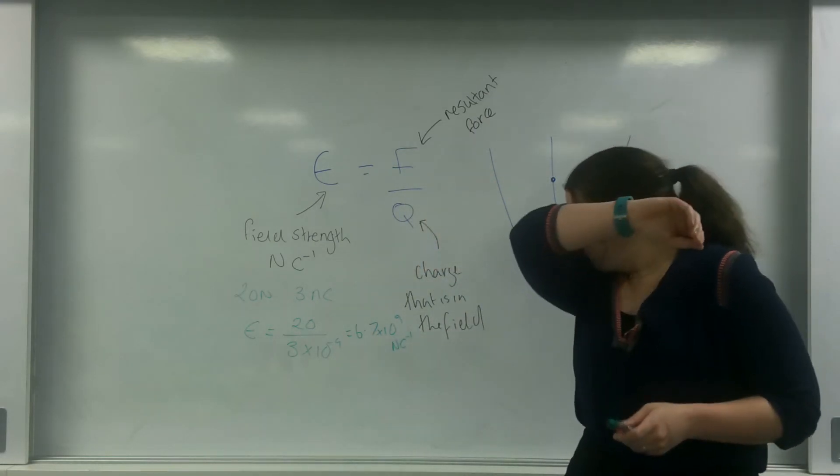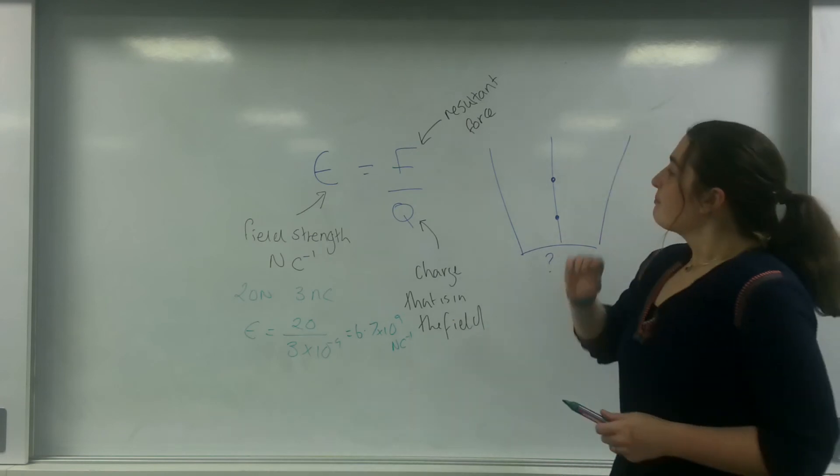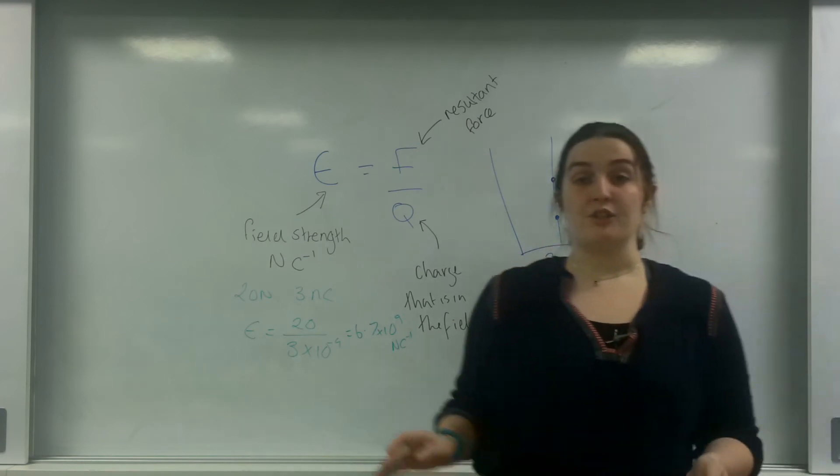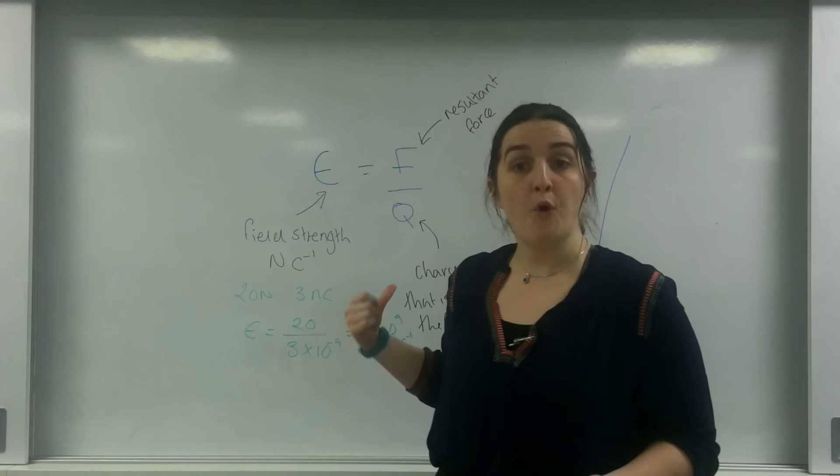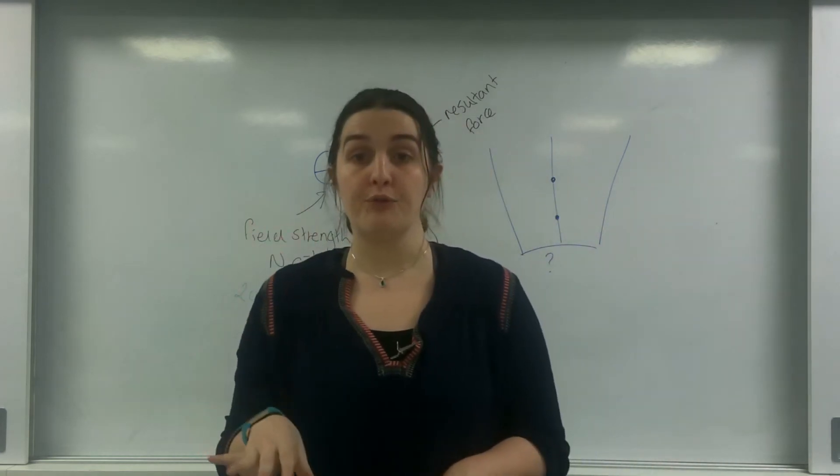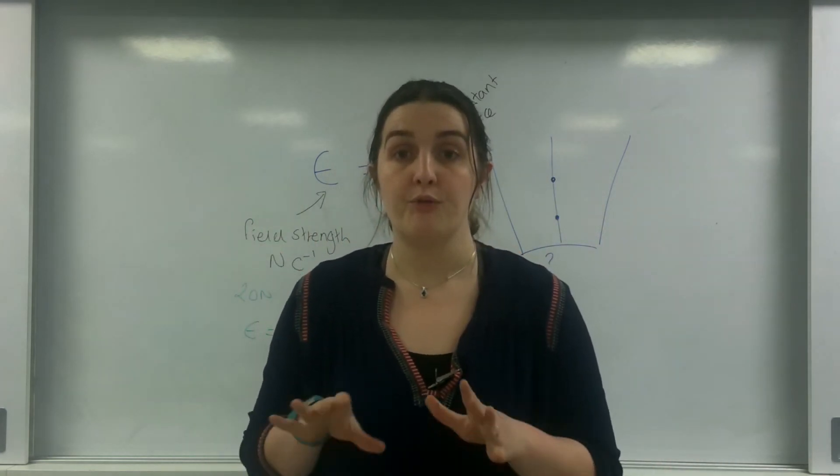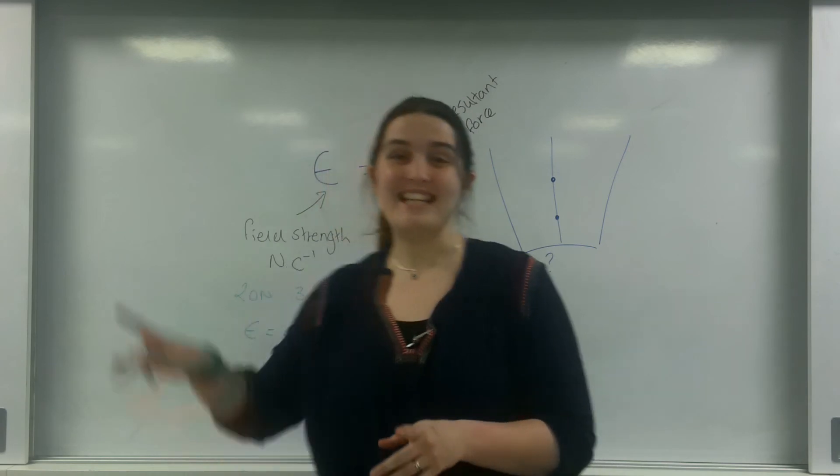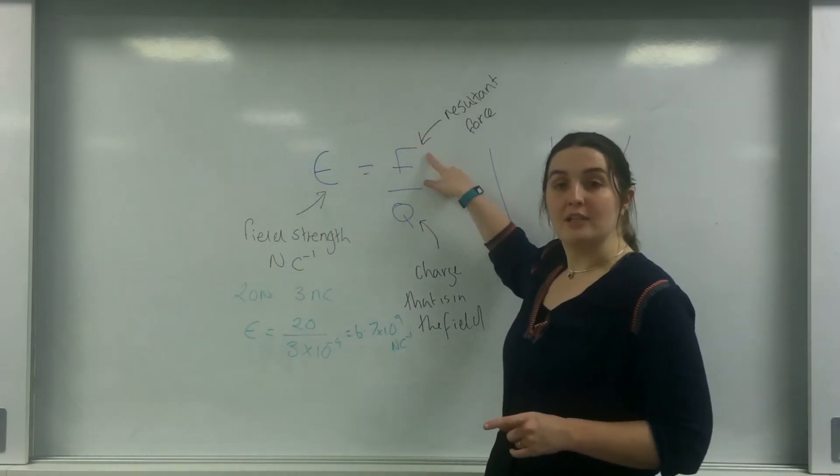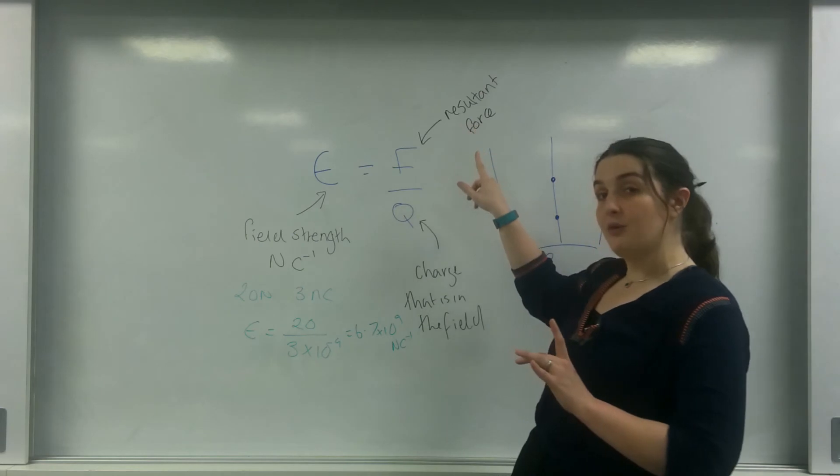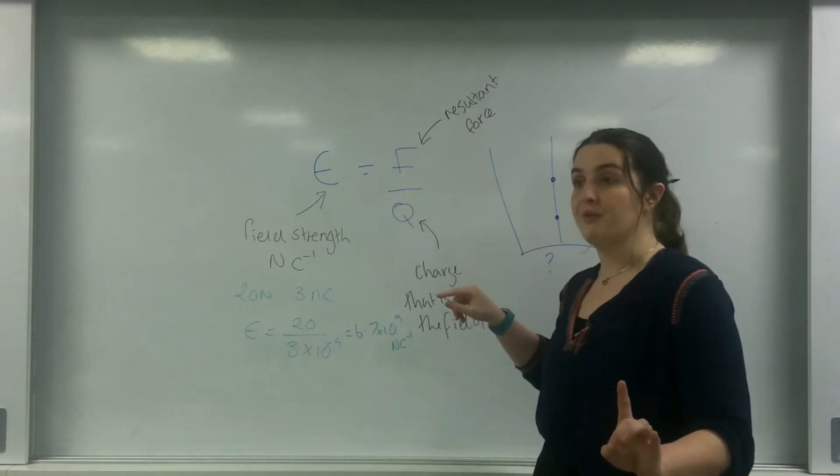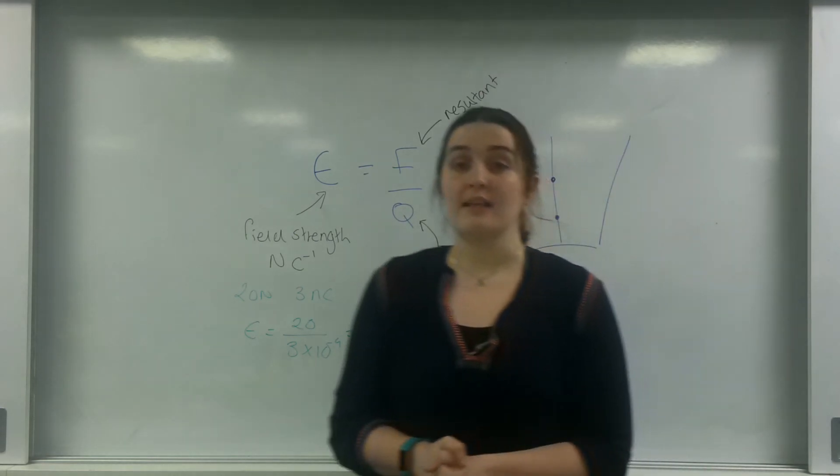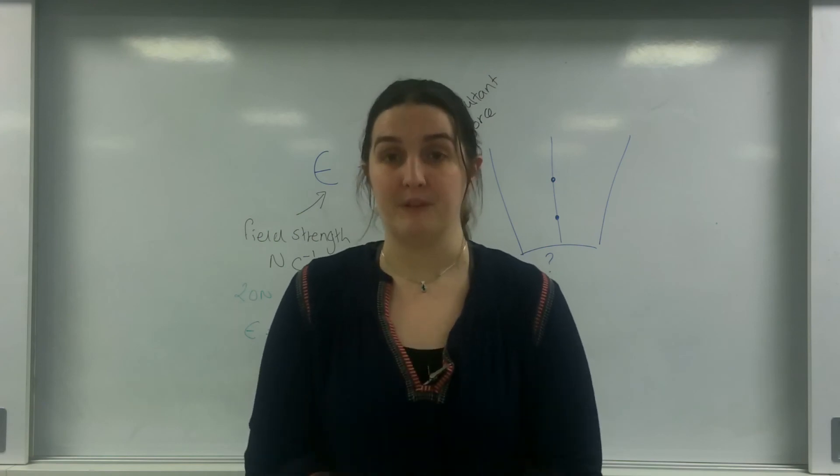Which is 6.7 times 10 to the minus 9 newtons per coulomb. So that, sorry about that, that there is electric field strength. Now this formula can be used for both uniform and radial fields. What happens is this F here will change depending on if it's a radial field or a uniform field. So that there is electric field strength.